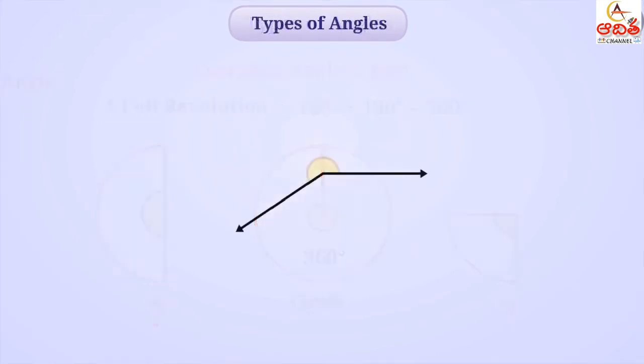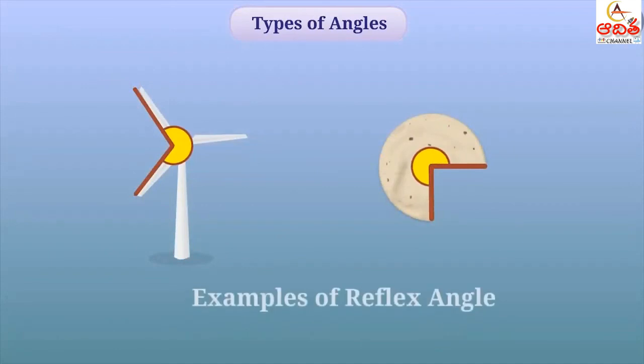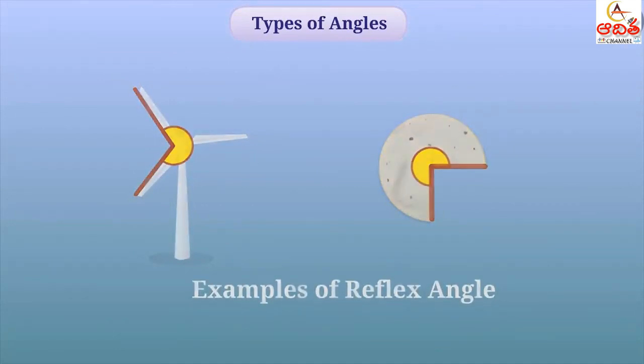Now if we look here, the angle shown here is greater than a straight angle but smaller than a complete angle. We call such an angle as a reflex angle. Some of the situations of a reflex angle are as follows. So now, you must have understood different types of angles properly.